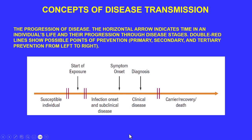Looking at the progression chart, the horizontal arrow indicates time in an individual's life and their progression through disease stages. The double red lines show possible points of prevention: primary, secondary, and tertiary. For a susceptible individual at the exposure stage, primary prevention might include vaccination, prophylactic antibiotics, or something as simple as wearing a mask.